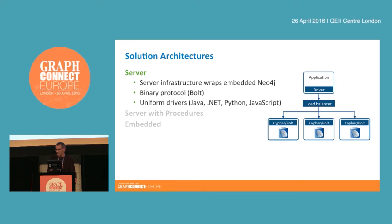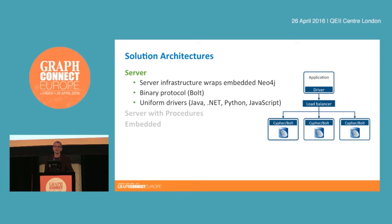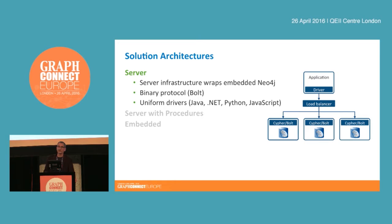The server version is the way in which the majority of people use Neo4j today. It's a server-based product. We've built the server infrastructure based on Jetty that surrounds an embedded graph database instance. Inside each server there is an embedded graph database making all of that data durable on disk, and we've created a server infrastructure that surrounds it so you can locate that instance somewhere on the network. Typically you'll speak to that instance or to a cluster of instances by way of a driver.